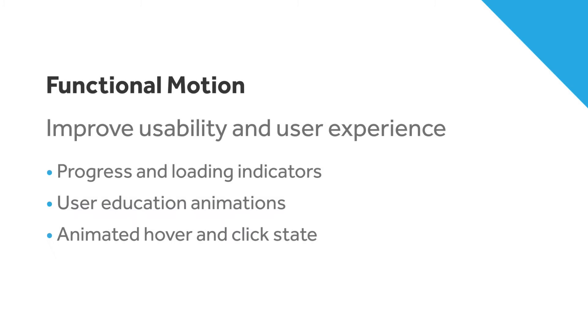Functional motion is the next motion category. This is motion that improves usability or user experience — things like providing feedback, indicating where someone is in a complex flow, or demonstrating what the next step is that they should take.